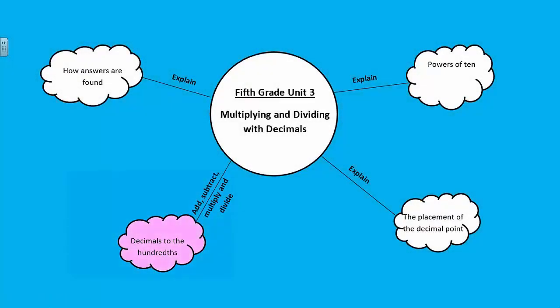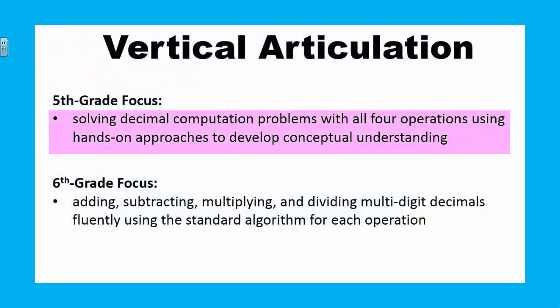In the next part of the unit, students add, subtract, multiply, and divide decimals to the hundredths place using concrete models and drawings and strategies based on place value and the properties of operations. This standard includes students' reasoning and explanations of how they use models, pictures, and strategies to find the answers to problems. Before students are asked to give exact answers, they should estimate their answers based on their understanding of operations and the value of numbers. At the fifth grade level, all operations with decimals are emphasized from a hands-on approach in order to develop understanding rather than relying on memorization of rules and procedures.